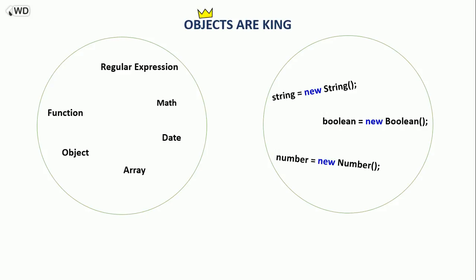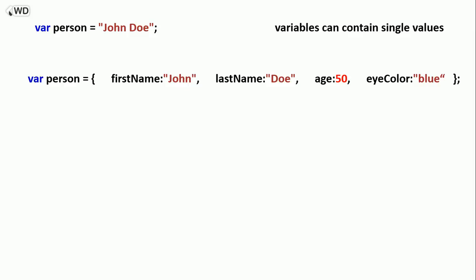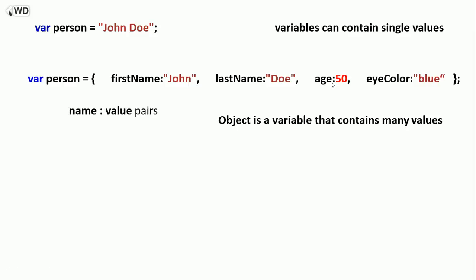By understanding objects you understand JavaScript. In JavaScript, to create a variable we say: var person = some value. So a variable in JavaScript can contain single values. For an object we say: var person = { } and we add some values inside. So an object is also a variable — it contains many variables that have values. An object is a variable that contains many values, written as name and value pairs separated by a colon.